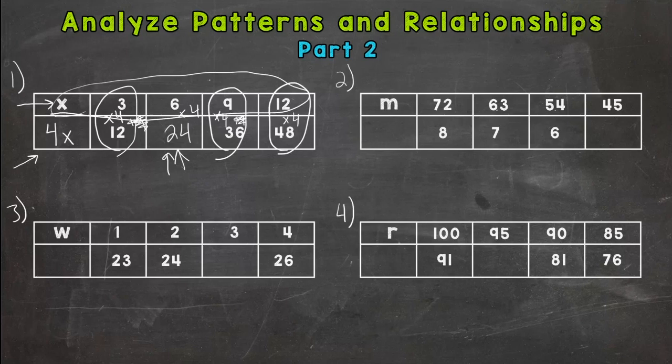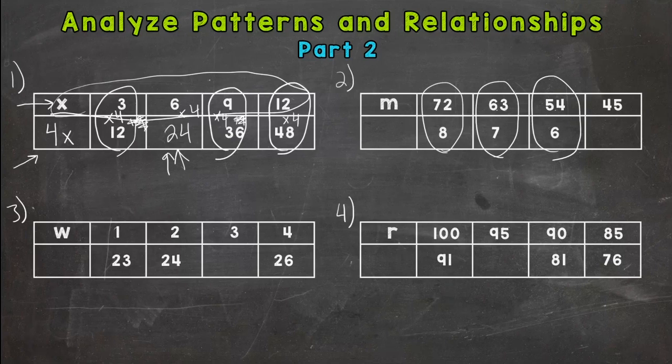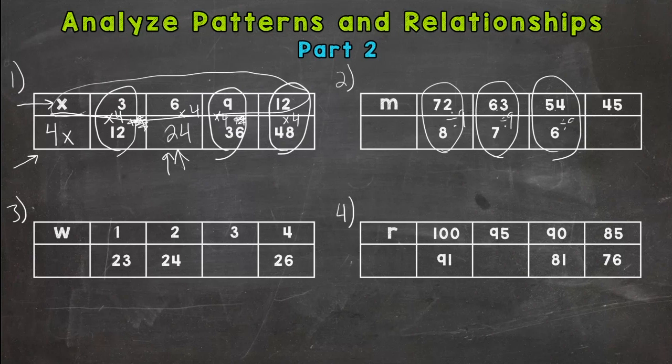So let's go to number 2 here. 72 and 8, corresponding terms. 63 and 7. 54 and 6. And then we have a missing term. So 72 to equal 8, we are decreasing in value. So it's going to be subtraction or division. And this is actually going to be 72 divided by 9 equals 8. Let's try it for the other ones. 63 divided by 9 does equal 7. And 54 divided by 9 does equal 6. So what's 45 divided by 9 going to give us? 5.